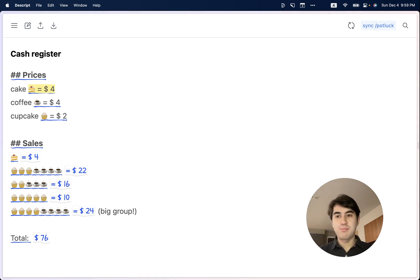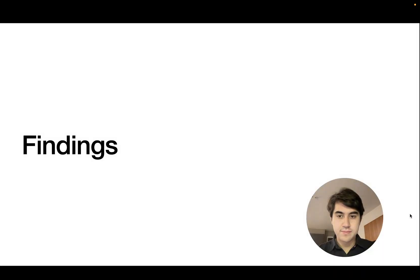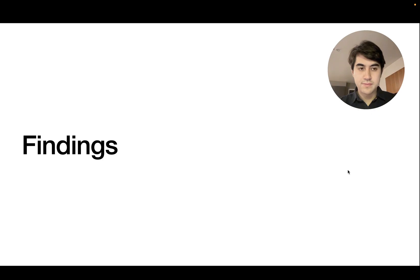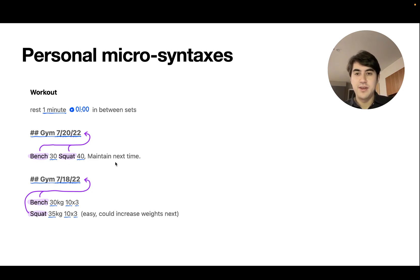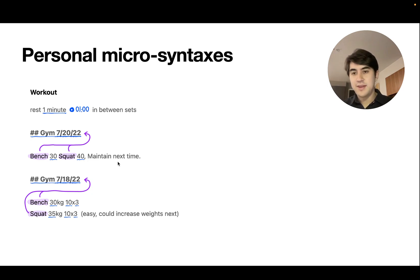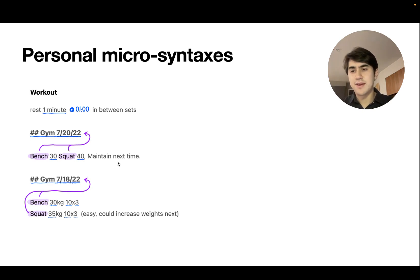Now I'll close with some brief reflections from building all these demos in Potluck. One thing we found is that Potluck often works quite well when people have a roughly consistent way of writing down and relating some information — for example, you might always write the date before you write down what you did in your workout. We call these personal micro-syntaxes, and they tend to be relatively straightforward to parse with the kinds of formulas we have in Potluck. In contrast, it's harder to parse arbitrary content, like a recipe that someone wrote on the internet, which often devolves into natural language processing problems not easily solved by simple regular expressions and patterns.